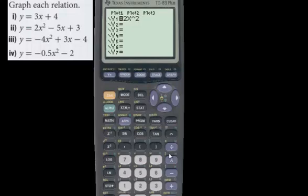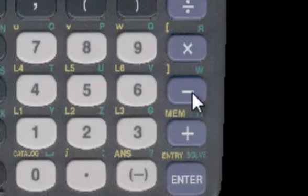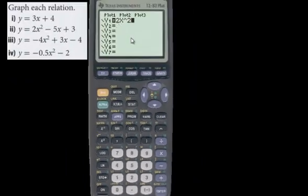So 2x squared minus, and be careful, not this negative button down here, but this minus sign here. The negative button is used if there was a negative at the beginning. If it, well, I guess you'll see that on the next question. So I'll stop talking. So we want minus 5x plus 3. Hit graph.